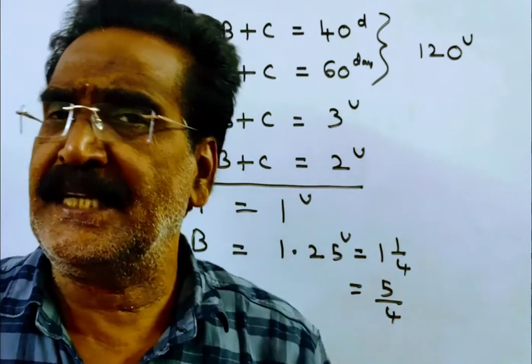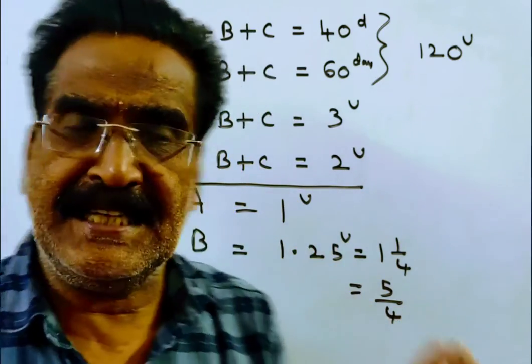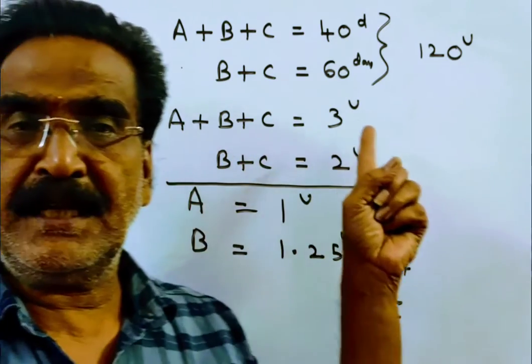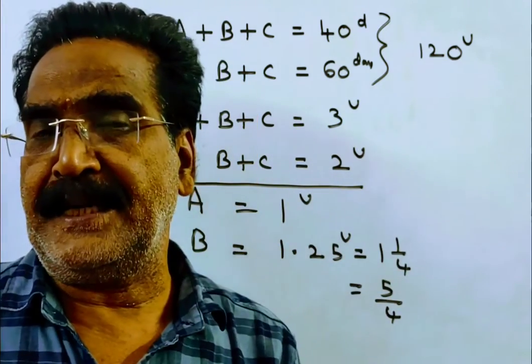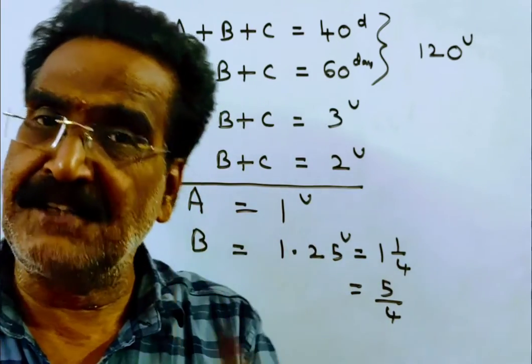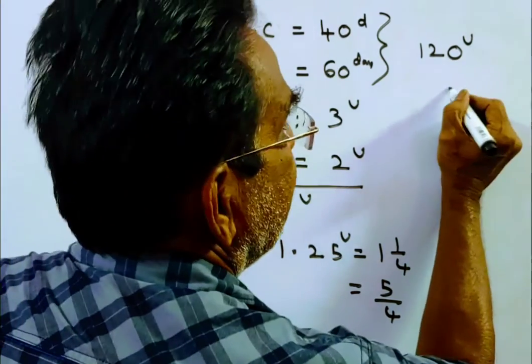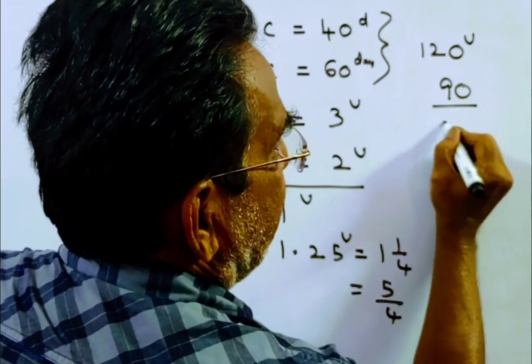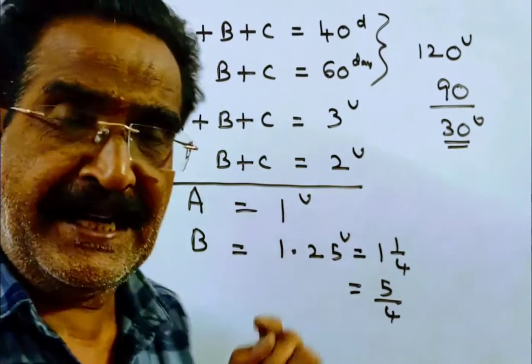A plus B plus C together worked for 30 days. A plus B plus C together can do 3 units of work per day. They worked for 30 days. In 30 days, 3 times 30 equals 90 units of work will be completed, and the remaining work, 30 units of work, will be remaining.